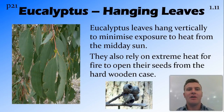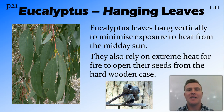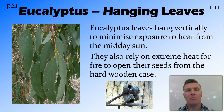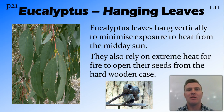In a very similar way, eucalyptus trees have leaves that hang downwards or droop downwards. This maximises exposure in the morning and in the evening but minimises exposure during the heat of the day when the sun is at its highest.